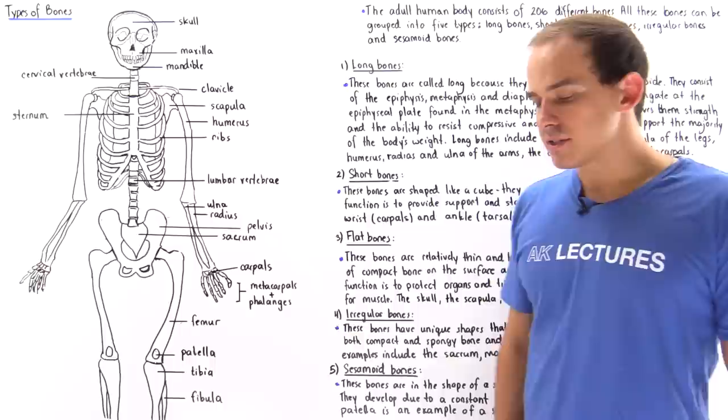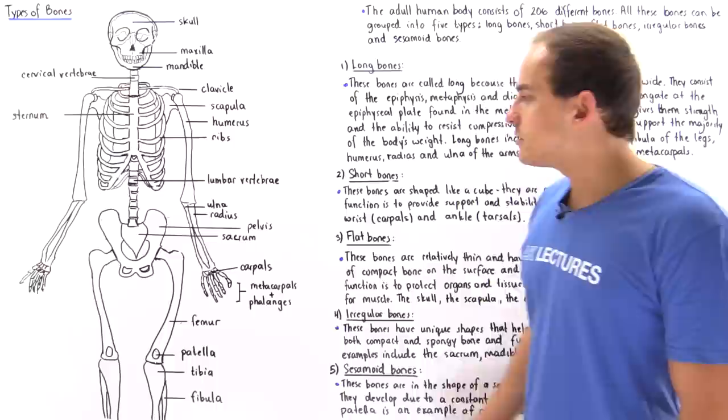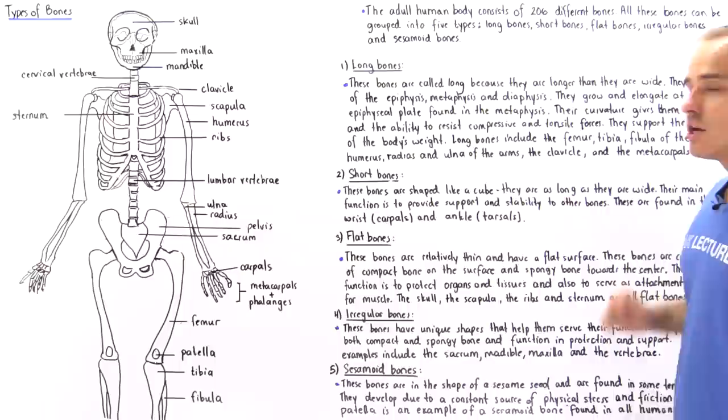Let's discuss what these five different types of bones are, discuss their function, and then take a look at the following diagram and place some of these bones into their correct group.